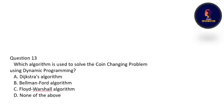Question 13: which algorithm is used to solve the coin changing problem using DP? The options are Dijkstra's algorithm, Bellman-Ford algorithm, and Floyd-Warshall's algorithm. None of these algorithms are used to solve the coin changing problem — the coin changing algorithm itself is used. So the correct option is D, none of the above.